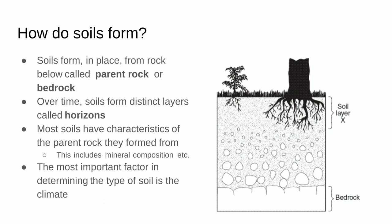Soils form in distinct layers called horizons. The very top layer, represented by an 'A' in this diagram, is where the plants grow — it's the richest, most organic layer. You can see there are roots and grasses, and all the particles are relatively fine. The characteristics of each layer reflect the bedrock at the bottom.